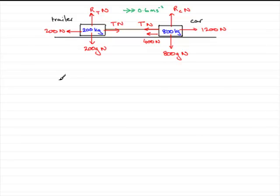So we'll start by doing that. Let's say we consider the trailer. If we consider the trailer, what we're going to do is resolve in the direction of motion to the right. So the resultant force on the trailer to the right is T minus 200 equals mass times acceleration. The mass is 200 kilograms and the acceleration is 0.6 meters per second per second.